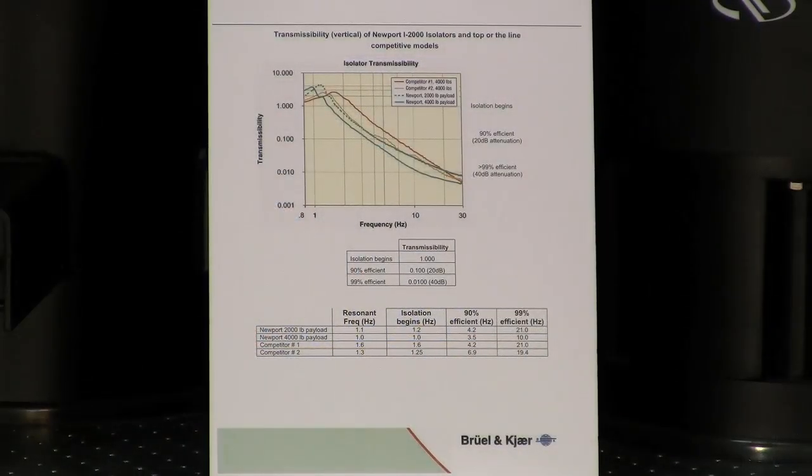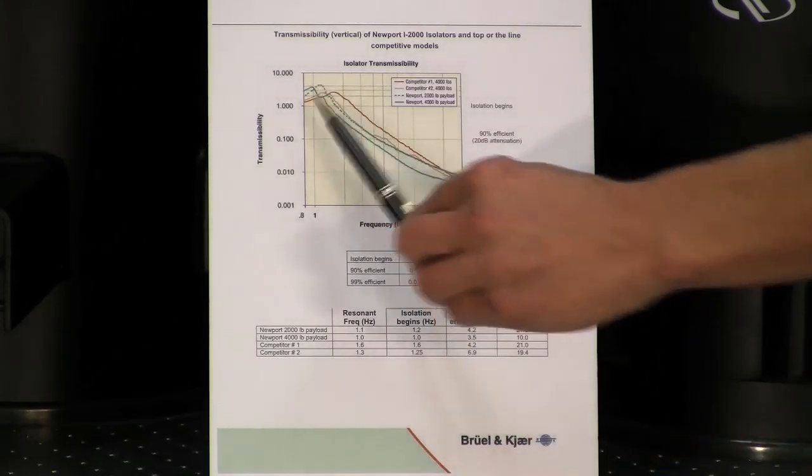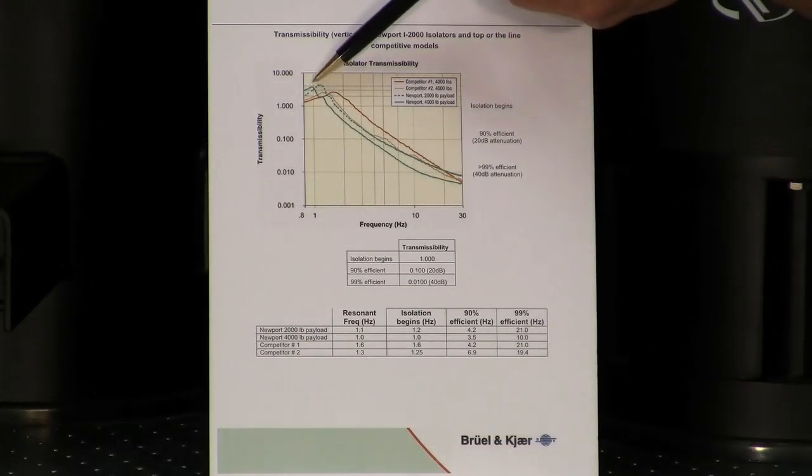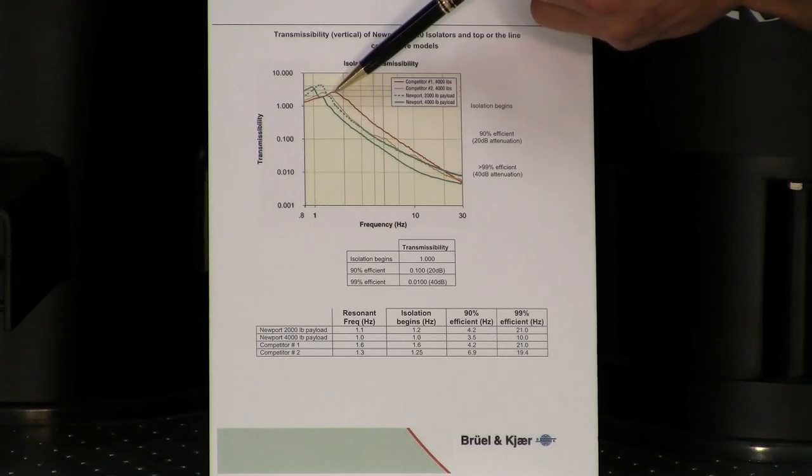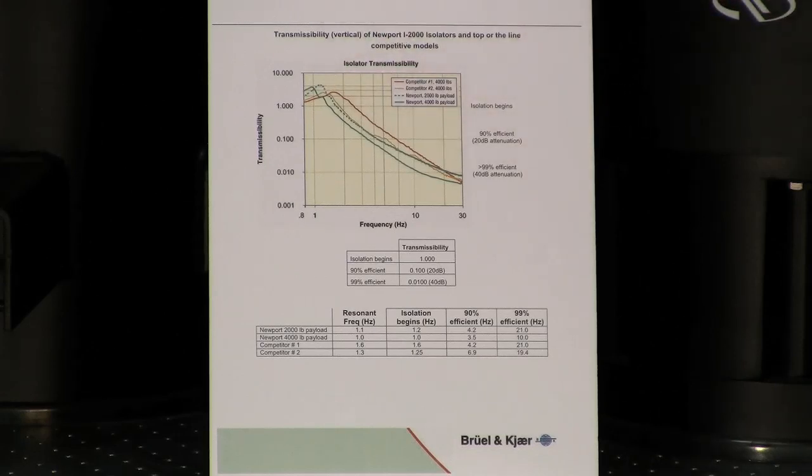What you're looking at now is a sample of our test report done by an independent company, Brüel & Kjær, testing the performance specifications of our S2000 stabilizer versus competitive models. On this chart you'll notice a few things. There's four different lines on the chart: there's the green line, solid line, representing Newport's isolator, a dotted line representing Newport's isolator with a different load, a red line and an orange line representing two different competitive models.